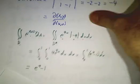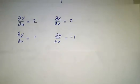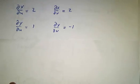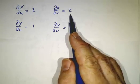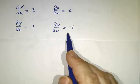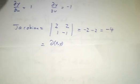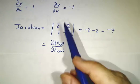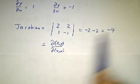So we have to figure out our Jacobian. But that's pretty easy, because x was 2u plus 2v, so the derivative with respect to u is 2, derivative with respect to v is 2. y was u minus v, so derivative with respect to u is 1, derivative with respect to v is minus 1. So the Jacobian is just the determinant of this matrix, and that's negative 4.